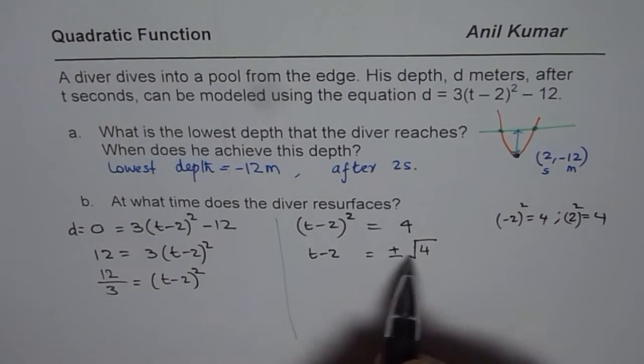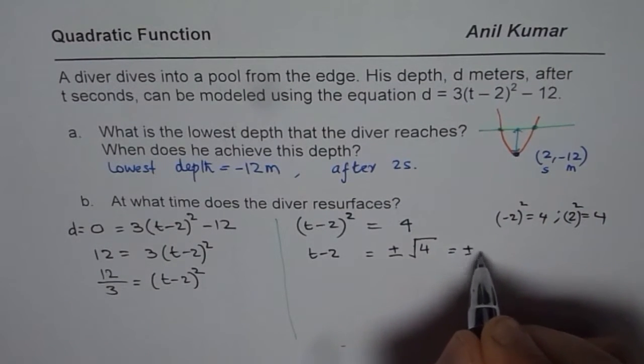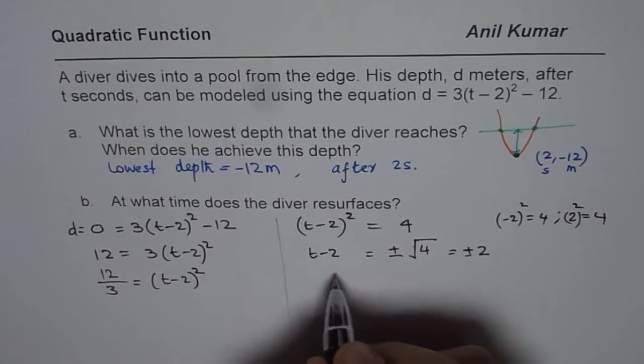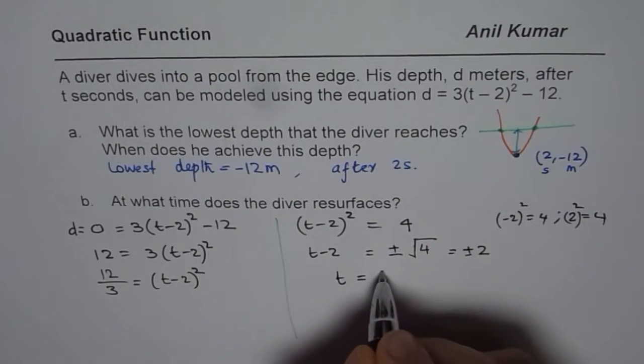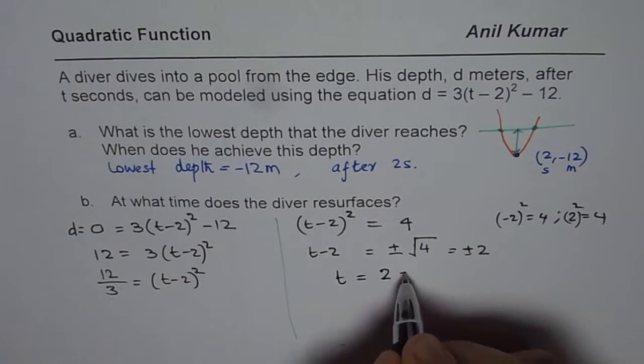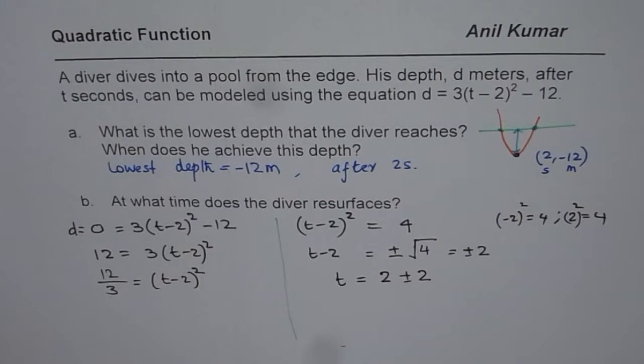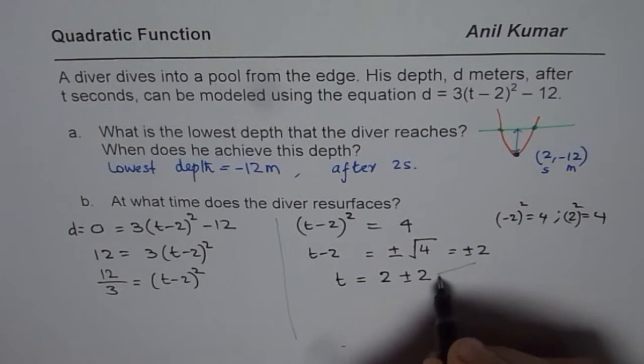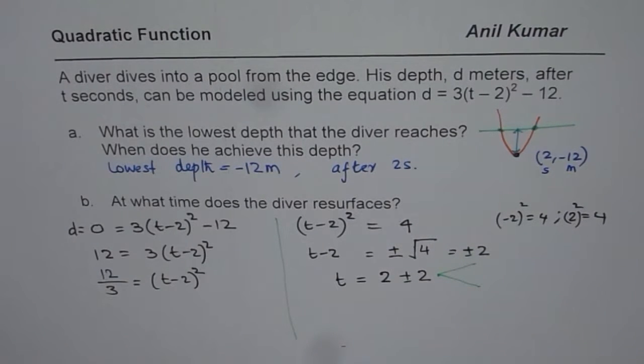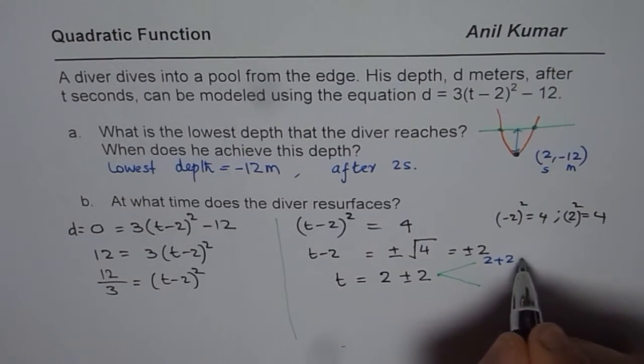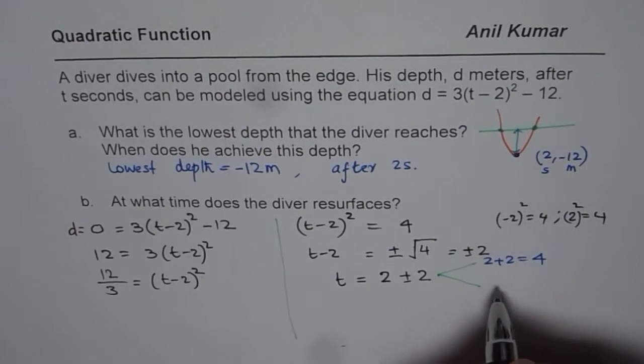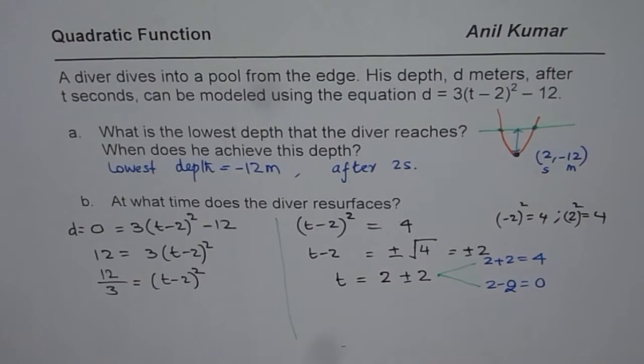So there are two possibilities, which is plus and minus 2. What is t equal to? We will bring this 2 to that side, so it is 2 ± 2. That means you get two values: one is with plus, the other is with minus. So we have 2 + 2, which is 4, and 2 - 2, which is 0.